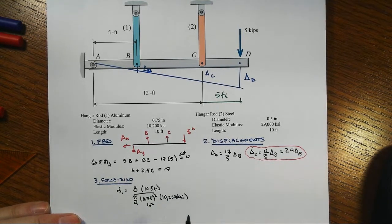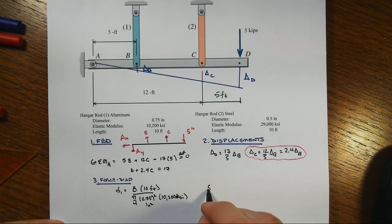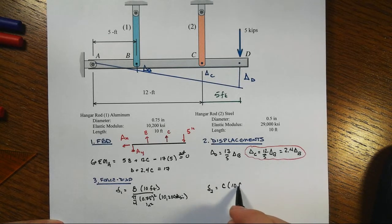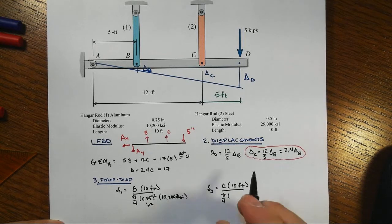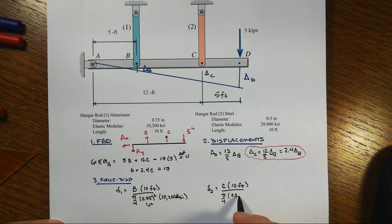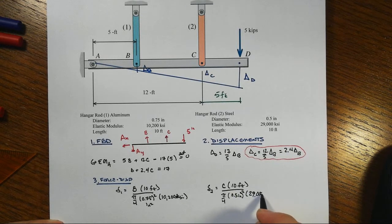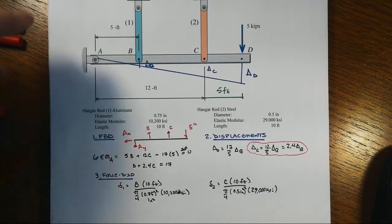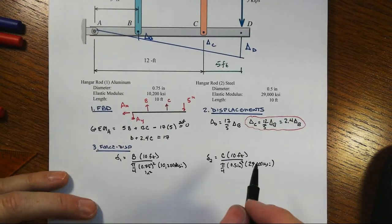And then we've got delta for the second one, and that's going to be C times also 10 feet over pi over 4 times 0.5 inches squared. And the E that we have here is 29,000 KSI. That looks kind of messy here, and we could work out some numbers, but note something else here.